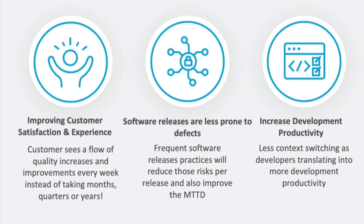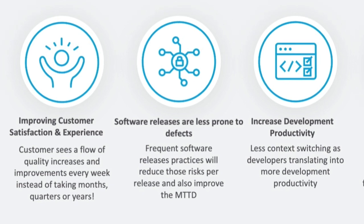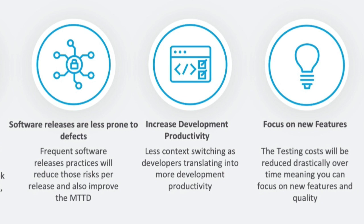The second point is your releases being less prone to defects. By releasing frequently you will reduce those risks and improve the MTTD, which means mean time to detect or discover. Moving to the center — why does it increase development productivity? It is that mix between automation and improved communications that gives you and your development teams time to focus on the most important work, instead of suffering from too many distractions or too much context switching.